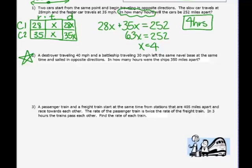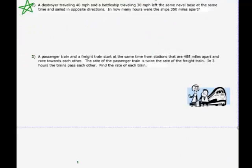Number three, I will do with you because this is a different picture, a different problem. A passenger train and a freight train start at the same time from stations that are 405 miles apart. In fact, this one is a case where one's starting from there, one's starting from here, and the total distance is 405 miles. They race towards each other. The rate of the passenger train is twice that of the freight train. In three hours, they pass each other or they meet. Find the rate of each train.